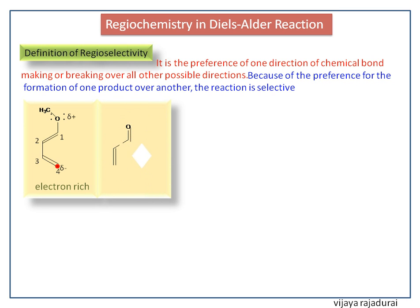This is the more reactive dienophile. The electron withdrawing group is present on the first carbon atom and withdraws electrons towards itself. So the second carbon atom gets very less electron density, represented by the partial positive charge.